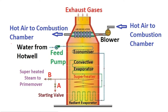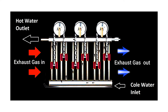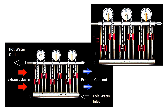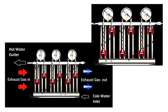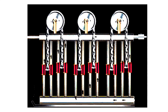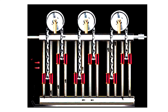The water is first passed through the economizer. The economizer is an accessory that saves fuel and increases the performance of the boiler. Flue gases pass through the economizer coil before entering the chimney. Some amount of energy available in the flue gases is utilized to transfer heat to the water through the economizer coil.